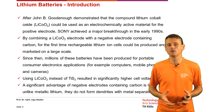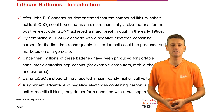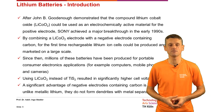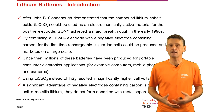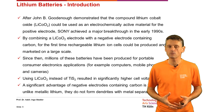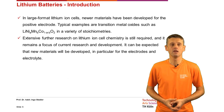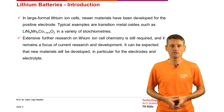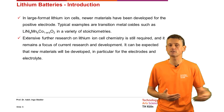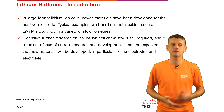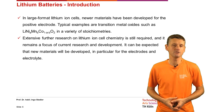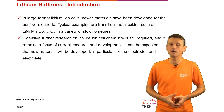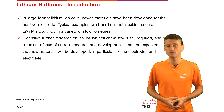Using Lithium cobalt dioxide instead of titanium sulfate resulted in significantly higher cell voltages. A significant advantage of negative electrodes containing carbon is that, unlike metallic lithium, they do not form dendrites with metal separation. In large-format Lithium ion cells, newer materials have been developed for the positive electrode. Typical examples are transition metal oxides using combinations of Lithium, Nickel, Manganese, and Cobalt in a variety of stoichiometries. Extensive further research on Lithium ion chemistry is still required and remains a focus of current research and development.